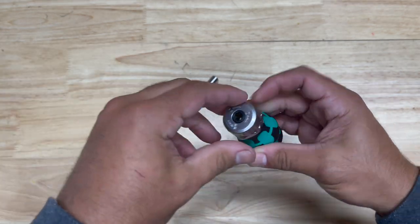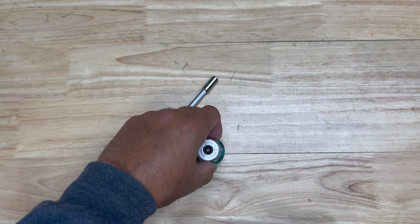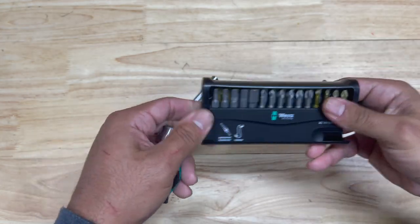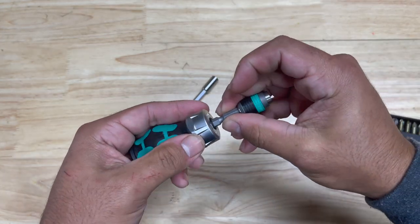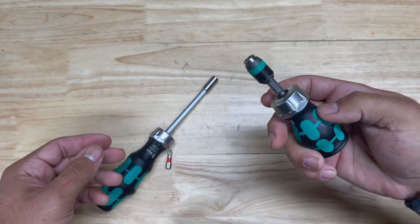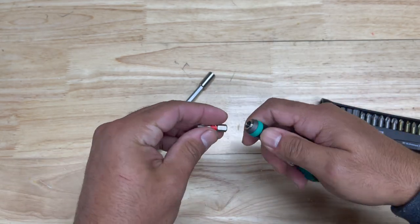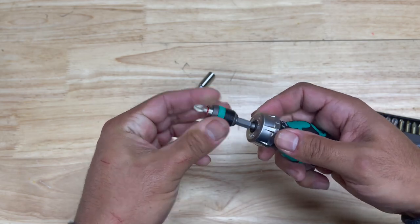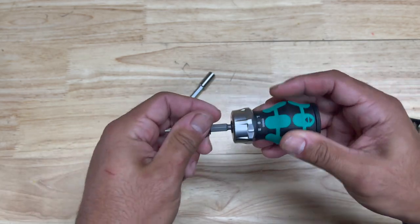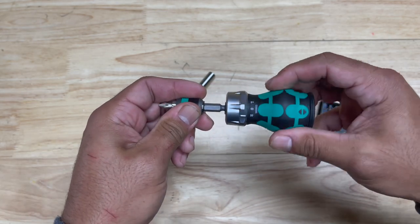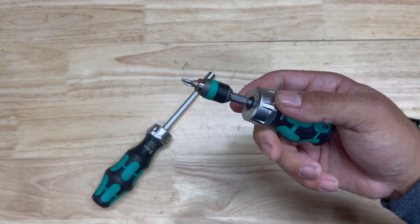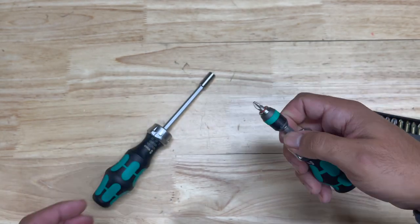You can also if you have a bit check that comes with your wrap adapter, if you need a little bit of extra leverage you can connect your wrap adapter to your stubby and bam you got a little bit of an extension there where you can get more torque on whatever it is you're trying to drive.